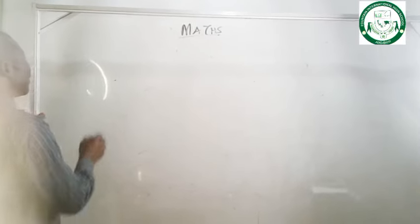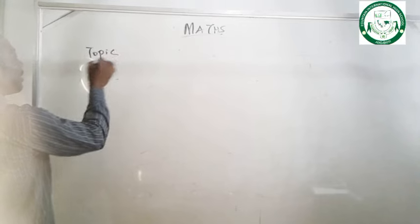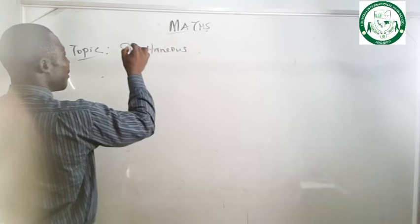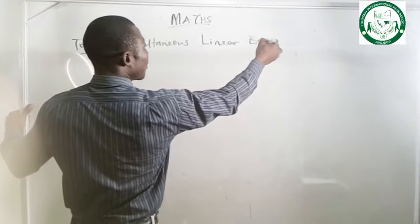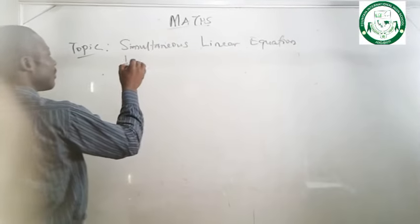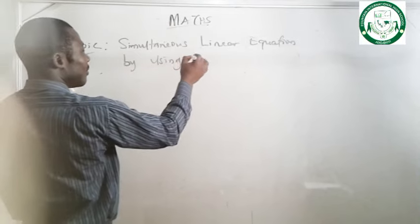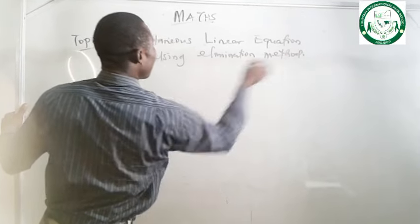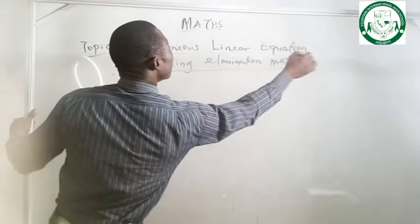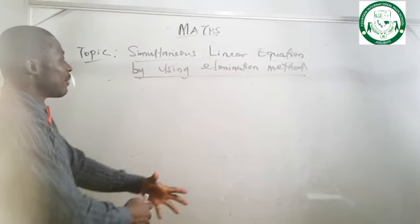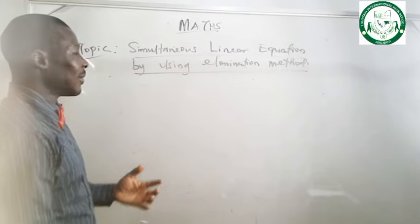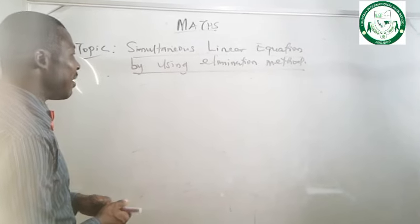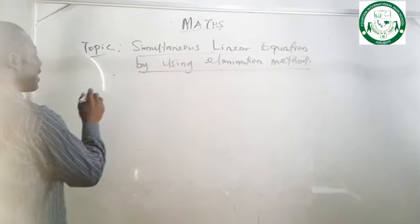Our topic for today is simultaneous linear equations by using elimination method. As we all know, we have three ways of solving simultaneous equations: either by graphical method, substitution method, and elimination method. So once we look at elimination method this morning, let's take these examples.